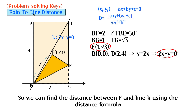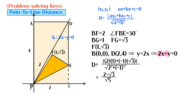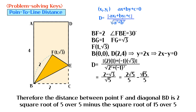So we can find the distance between F and line K using the distance formula: the absolute value of (2 times 1) plus (negative 1 times √3), over the square root of (4 plus 1). Therefore, the distance between point F and diagonal BD is (2√5)/5 minus (√15)/5.